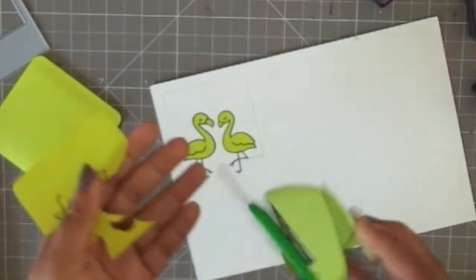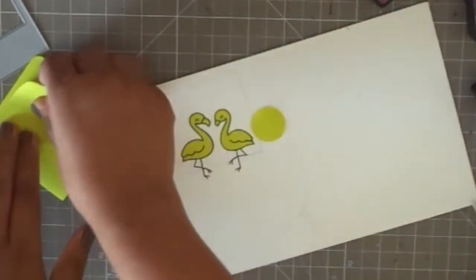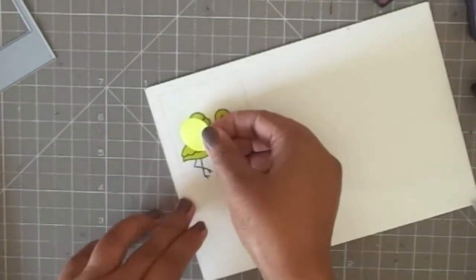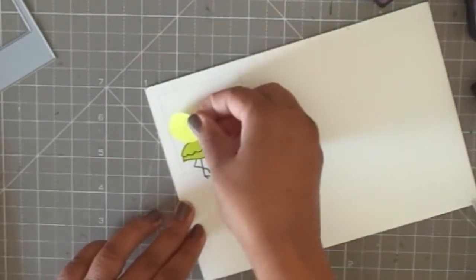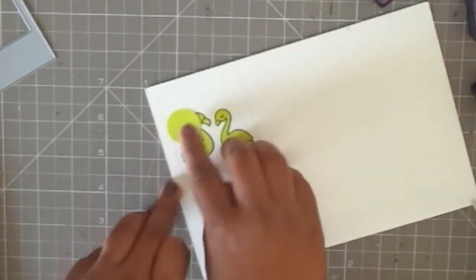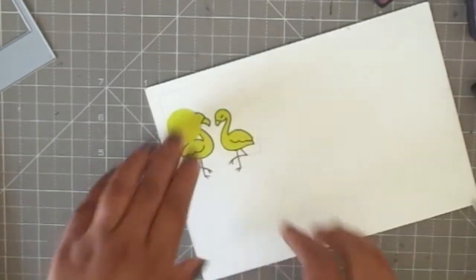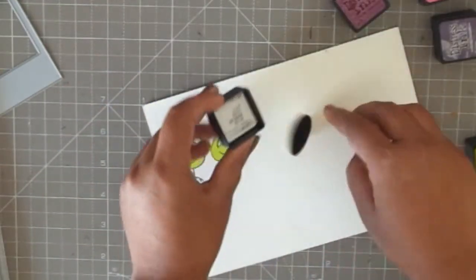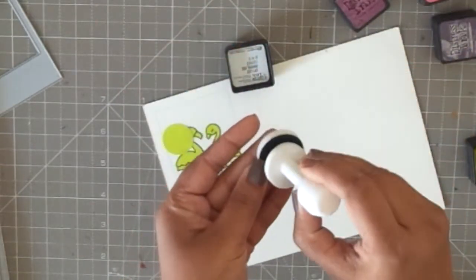To create the sun, I'm going to mask that as well. I'm using a one-inch punch and I punched out a circle from the same post-it sheet and going to just place it right behind the flamingos so it looks like the sun is setting behind them. Now we're going to work on the background using some distress inks and a blending foam.